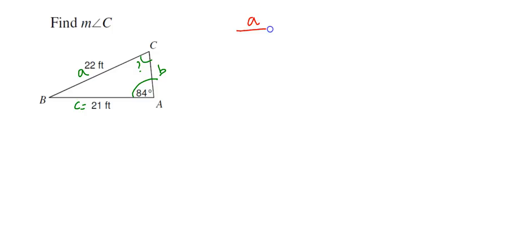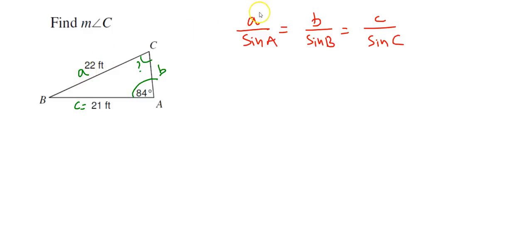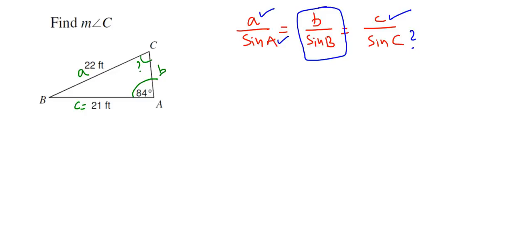The Law of Sines states: a over sin A equals b over sin B equals c over sin C. The measure of lowercase a is given and angle A is given. We don't know anything about B or lowercase b. But we are given lowercase c equal to 21 feet, and we are looking for angle C.